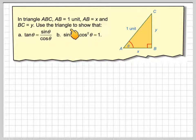In the triangle ABC, AB is one unit, AB is equal to x, and BC is y. So this is one unit, AB is x, BC is y. We've got to show that tan θ is sin θ over cos θ, so we've got to prove this identity, and show that sin squared plus cos squared is equal to 1.